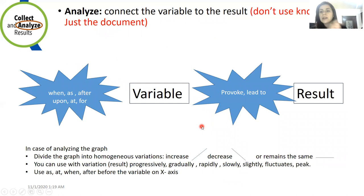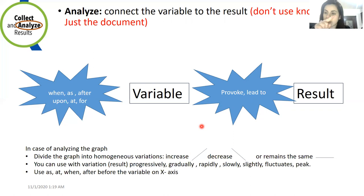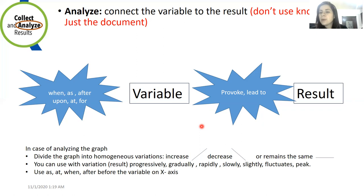Concerning analyzing: while analyzing, you cannot add knowledge — this is the first rule. How can I analyze? I have to connect each variable factor to its results and compare with other variable factors. For example, I put leaf A under sunlight — this leads to a positive test with iodine solution. Then I compare with the other variable factor: while leaf B was in darkness, it gives a negative test with iodine solution. So this is analyzing — connect each variable factor to its result.